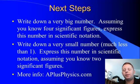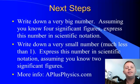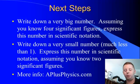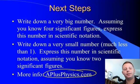Next steps, try writing down a very big number, and then assuming you know it to four significant figures, try expressing this in scientific notation. Then let's go the other direction. Write down a very small number, something much less than one. Express this number in scientific notation, assuming you know two significant figures. Finally, if you need more help or looking for more resources, check out aplusphysics.com.